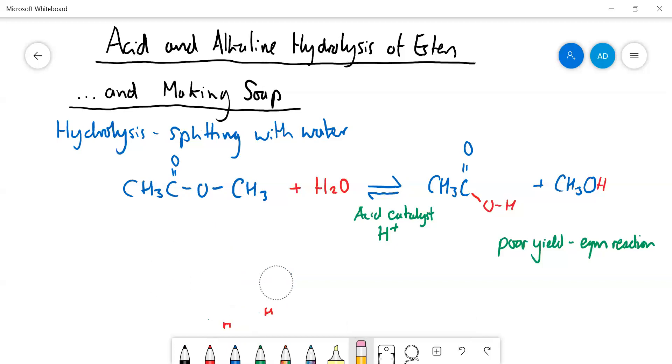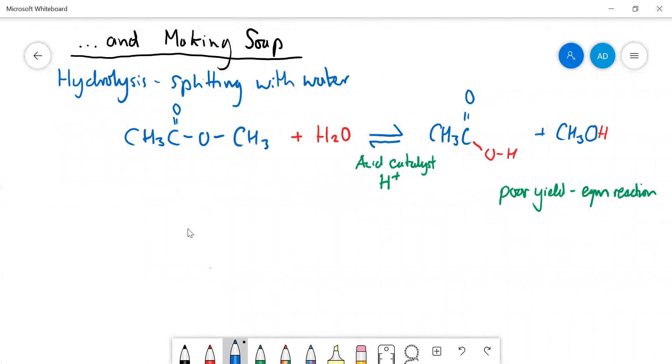But it's a very poor yield because it is in equilibrium. So rather than using acid catalyzed hydrolysis, if you want a good yield you use alkaline hydrolysis. Now, the use of the word hydrolysis here is not strictly speaking correct because as we'll see, you don't get the water splitting up the ester - it's not H2O that attacks, it's actually the OH- ion.